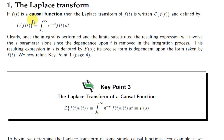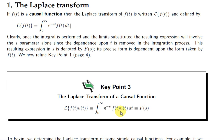In the last video we looked at the definition of a causal function — a function which is 0 for negative values of t. We also looked at the definition of the Laplace transform of f of t: we multiply f of t by e to the power of minus st and integrate this product from 0 to infinity with respect to t. So this is a function of s, and we often write it as big F of s.